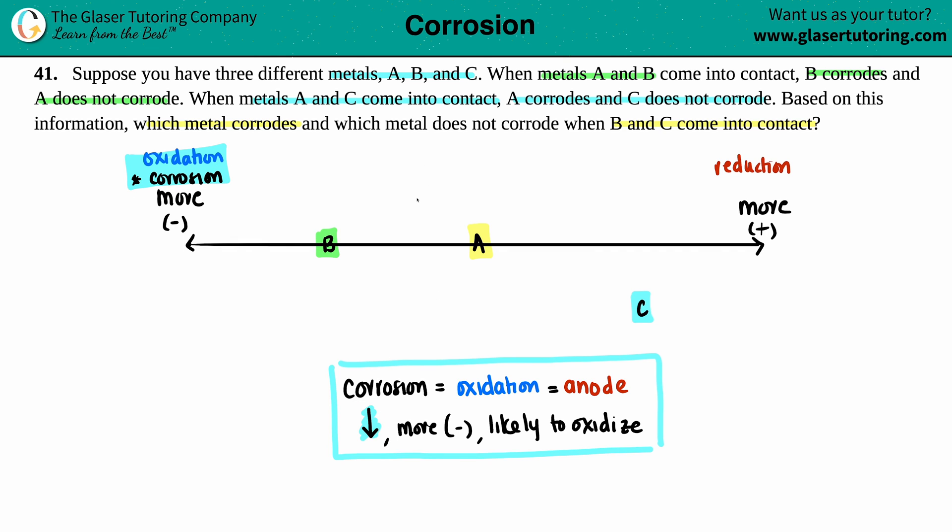So now let's add metal C into the mix. Now they say when metal A and C come into contact. So now I already placed A. So let's see. So metal A corrodes and C does not. So A now is the corrosion. So if A is here and this one is corroding, remember, keep in mind, the one that shifted down over here is the one that's going to corrode.